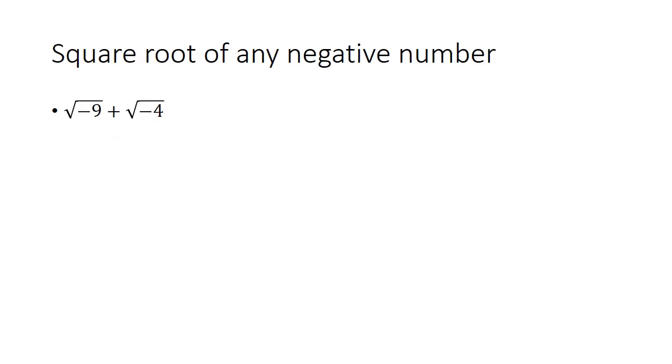Square roots of any negative number are not that complicated. You should think of splitting this up into 9 times, well, 9 times negative 1. Square root of 9 will be 3, and the square root of negative 1 is i. Do the same thing here, and you get 3i plus 2i, which you can combine to be 5i.